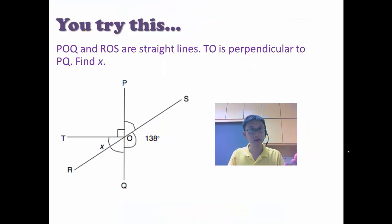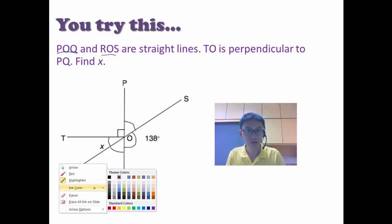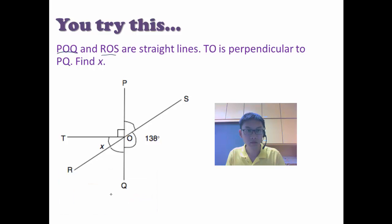So now that you've learnt what vertically opposite angles are and how to find unknown angles, how about you give this a try? Now remember, a few things you need to take note. P, O, Q and R, O, S. So where is P, O, Q? Let me highlight this for you. So P, O, Q is this line here, this vertical line and R, O, S are straight lines. Okay, T, O is perpendicular to P, Q. Alright,